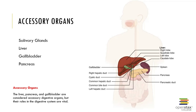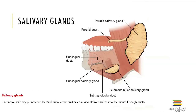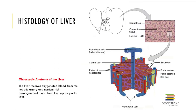All of these accessory organs are vital to the digestive system. The major salivary glands are located outside of the oral mucosa and are responsible for delivering saliva into the mouth through the ducts. Here's a close look at the tissues of the liver, showing how the liver receives oxygenated blood from the arteries and nutrient-rich deoxygenated blood from the veins.